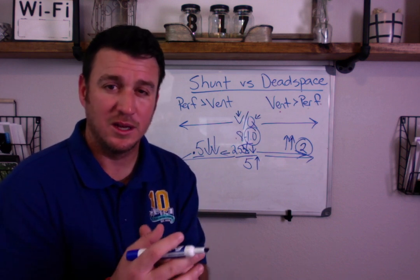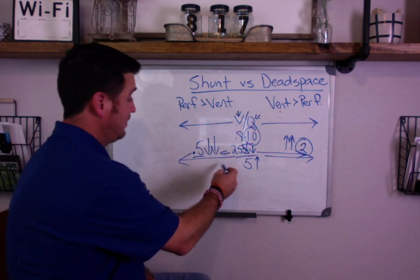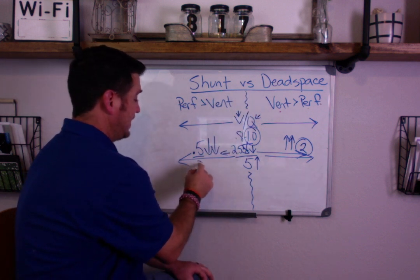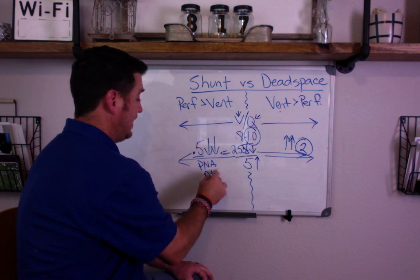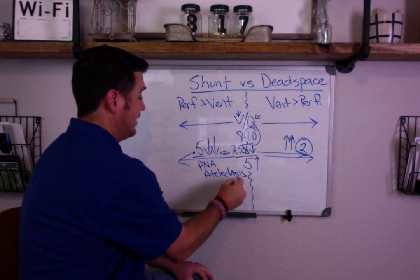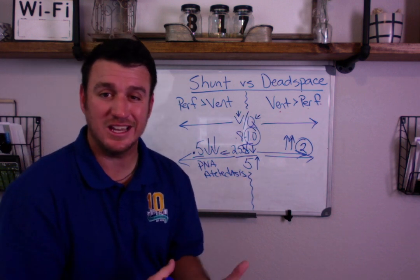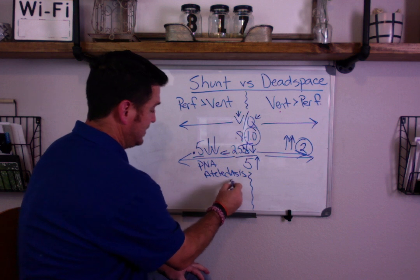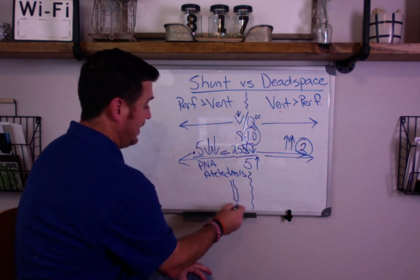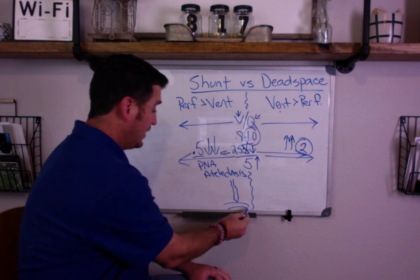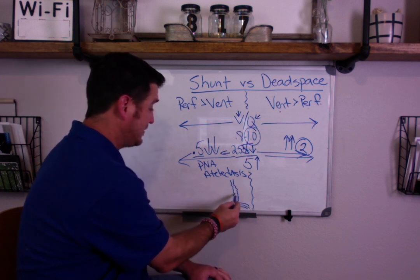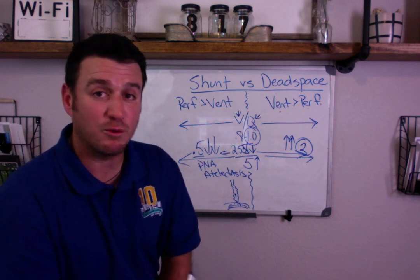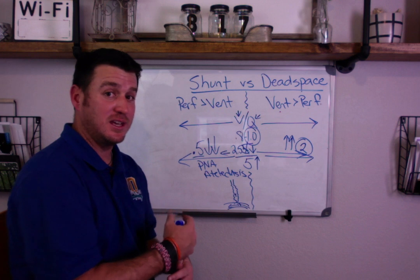What disease processes are we talking about? When we talk about shunt, we're talking about things like pneumonia, atelectasis, and pulmonary edema associated with CHF. Those types of conditions cause the alveoli to collapse. With atelectasis, you have all this blood flow coming past an alveolus that is not being ventilated — so you have perfusion in excess of ventilation in that region, which decreases your VQ ratio.